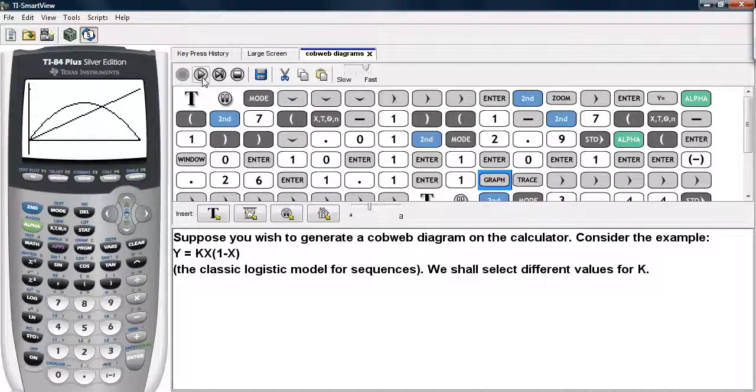Now, in order to see the diagram actually show up, you hit the trace button and then you hit the arrow keys either left or right. So we'll hit trace and then we'll start hitting the right arrow keys so we can see the cobweb diagram actually appear.